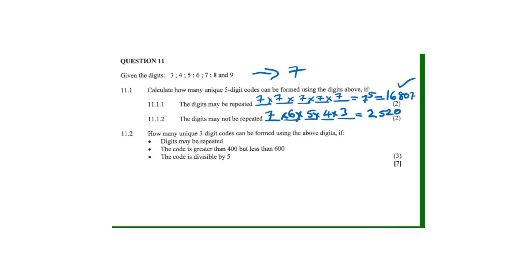For part 11.2, using the same digits: how many three-digit codes can be formed if digits may be repeated, the code must be greater than 400 but less than 600, and the code is divisible by five? It's a three-digit code, so we have three positions.